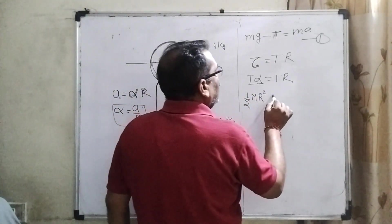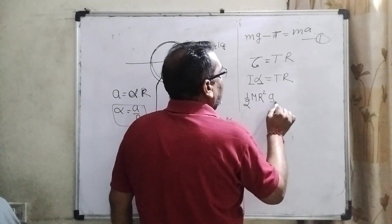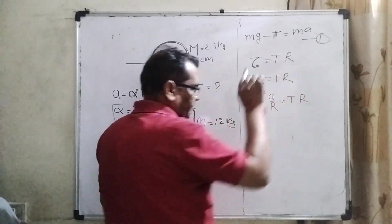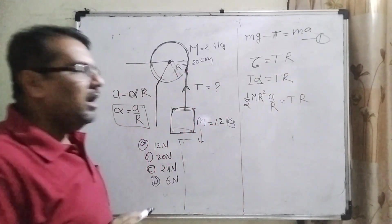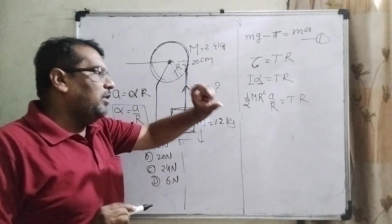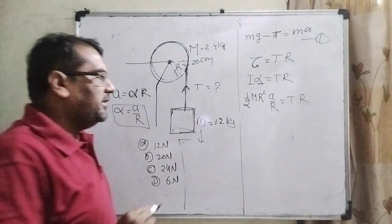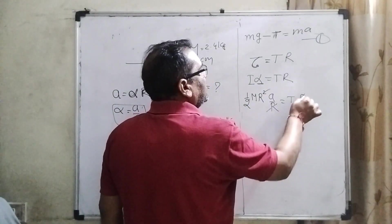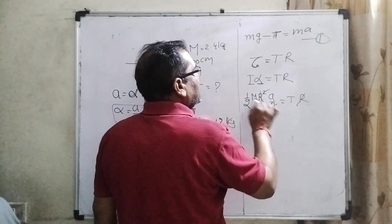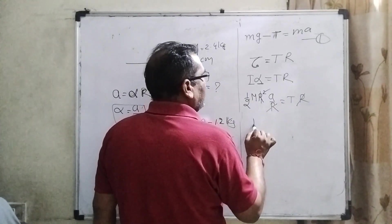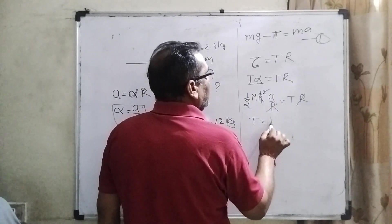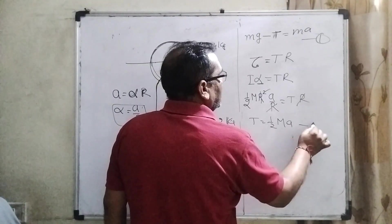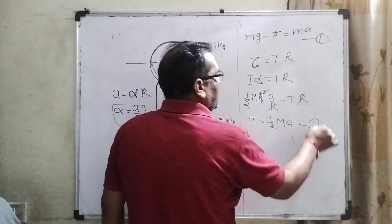Substituting alpha = a/R into T × R = I × alpha, we get T × R = (1/2) M R squared × (a/R). The R terms cancel out, and in place of T it can be written as one-half M times a. This is equation number two: T = (1/2) Ma.